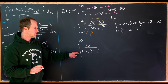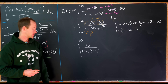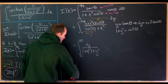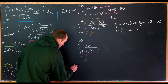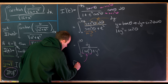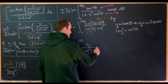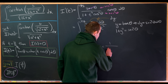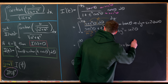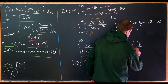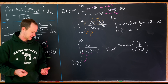This integral has a well-known antiderivative in terms of the inverse tangent function. Rewriting 1 plus t squared as the square root of 1 plus t squared quantity squared, the antiderivative is 1 over the square root of 1 plus t squared times arctan of y over the square root of 1 plus t squared.